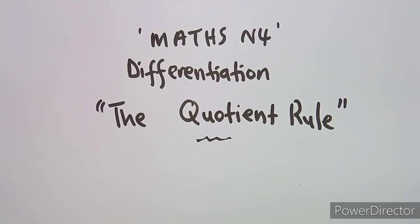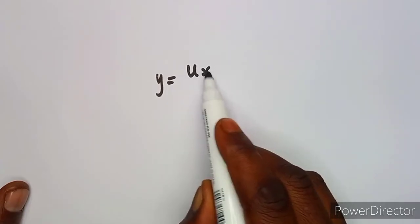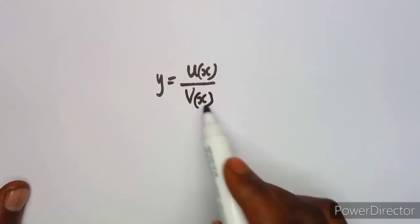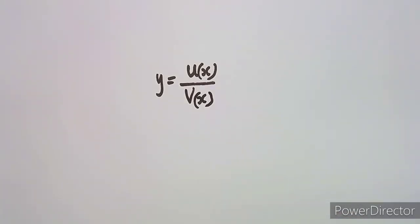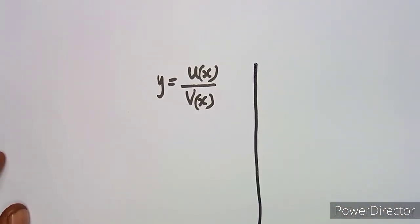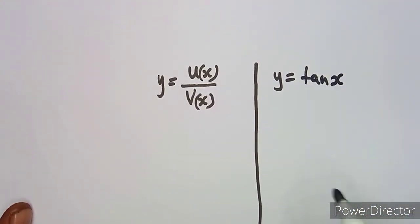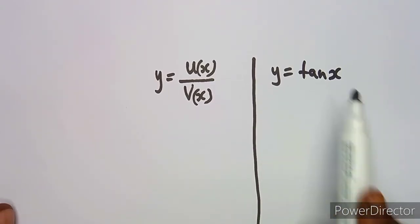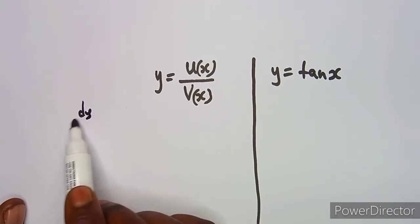If you're new to my channel, make sure that you subscribe so that you don't miss any of the classes we'll be having from Maths on African Motives. So the quotient rule — in this case we shall be dividing, and the formula is given in your formula sheet. Remember last time we worked with the two terms u(x) and v(x) but they were multiplying each other; this time they are dividing. So how do I find the derivative of this? Let me use this as an example. Don't worry, let's just write the formula first.